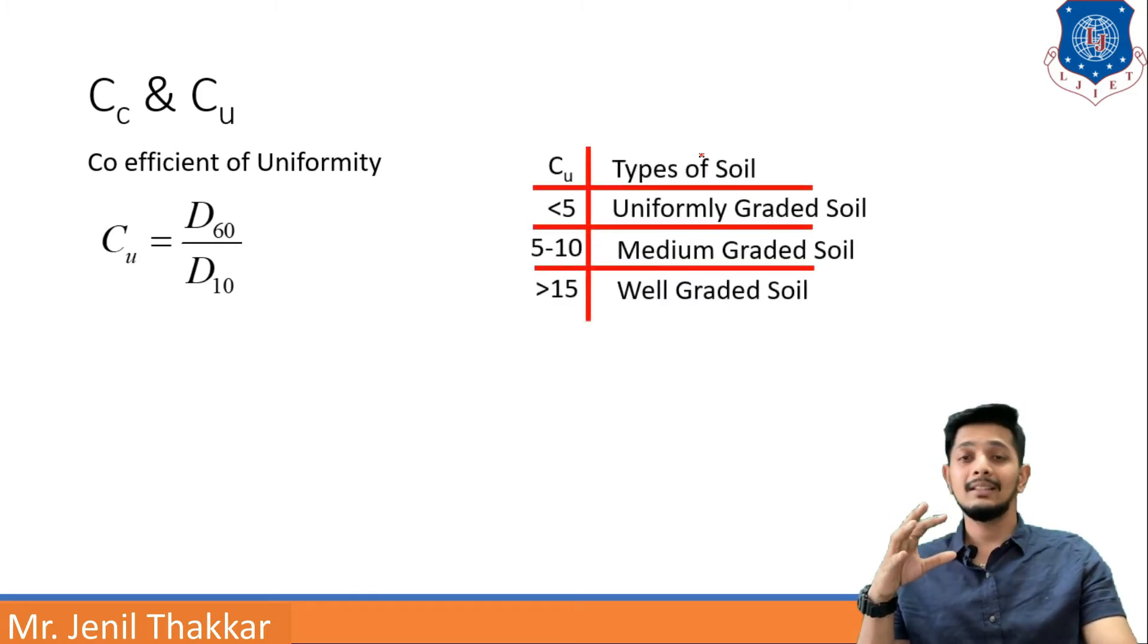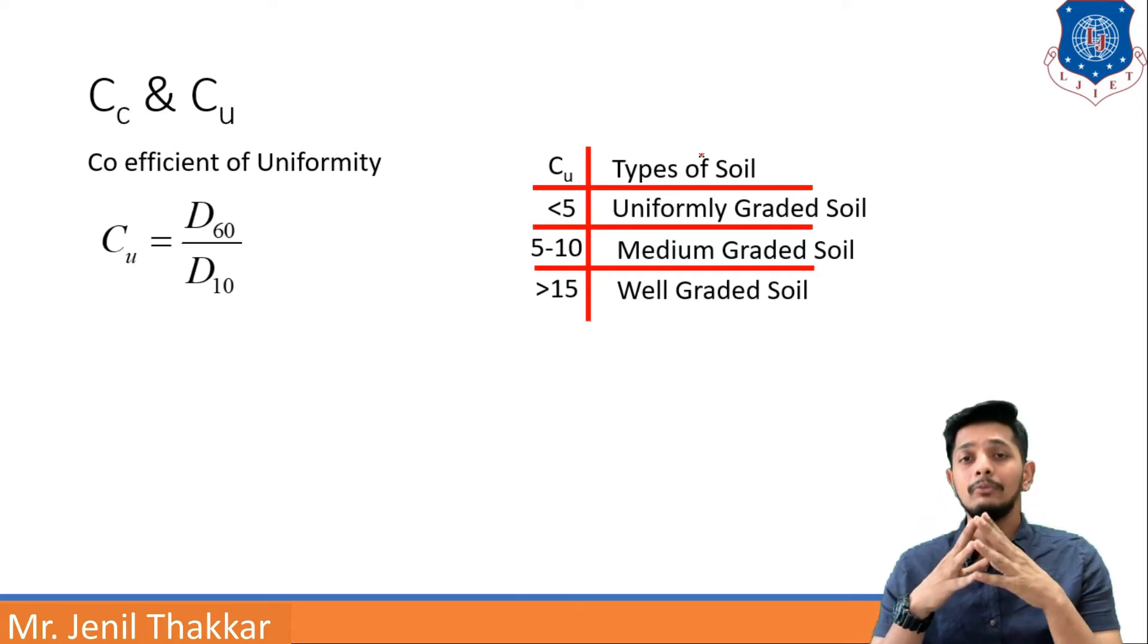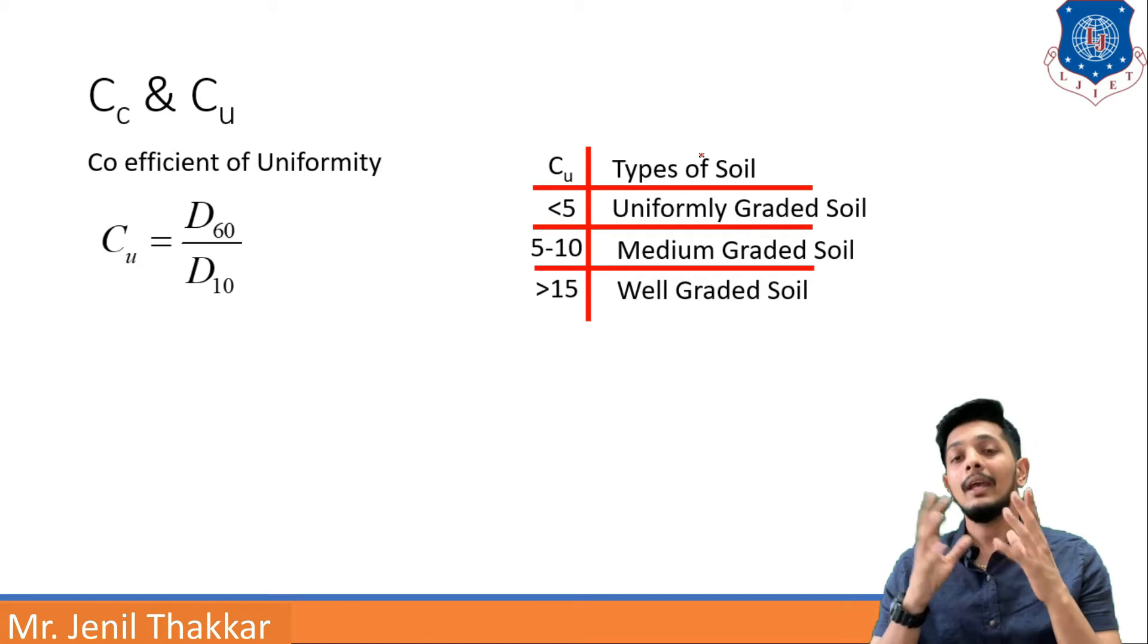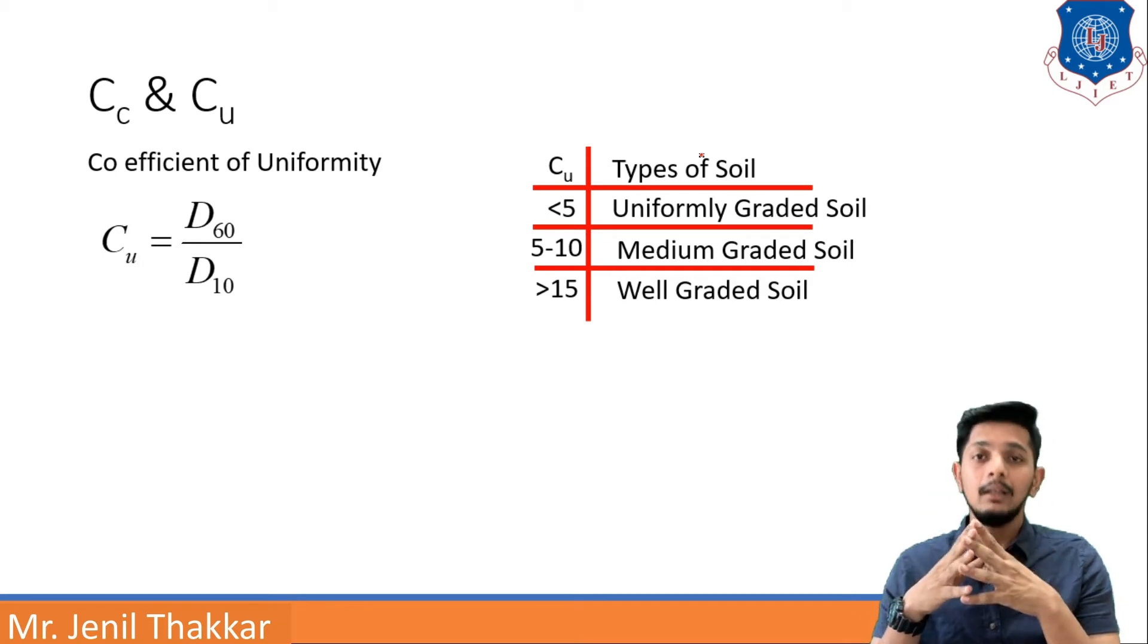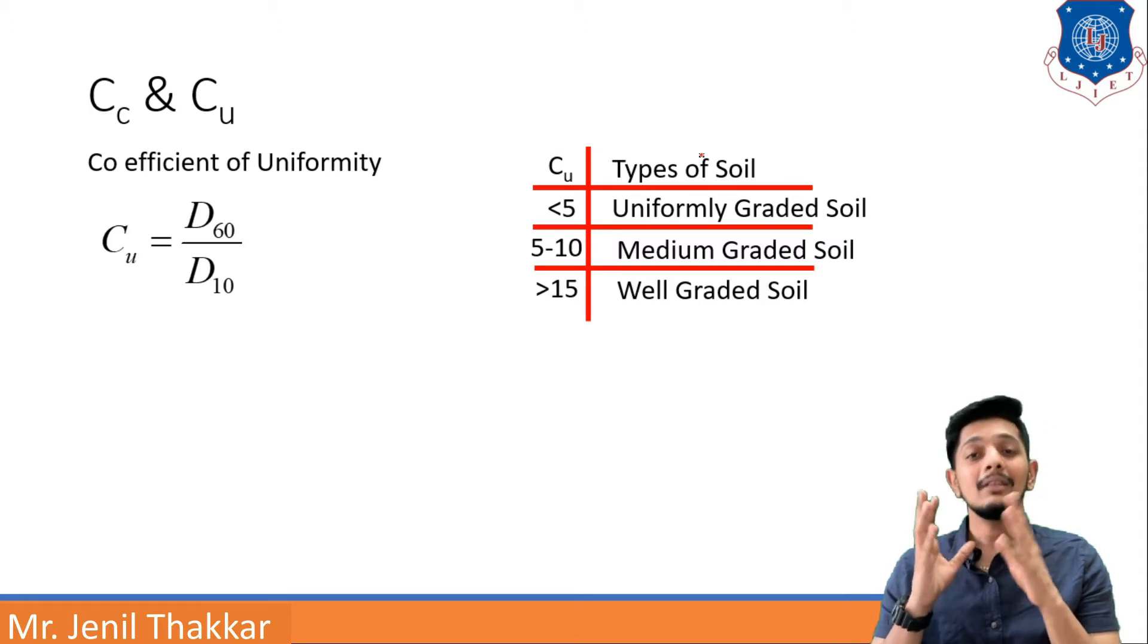You know D60 is what? D60 is the size from that the particle sizes will be finer than this only. There will be 60 percentage, and if D10 is there from that we can see from the graph that all the particle sizes will be finer than this and it will be in percentage 10 percentage.